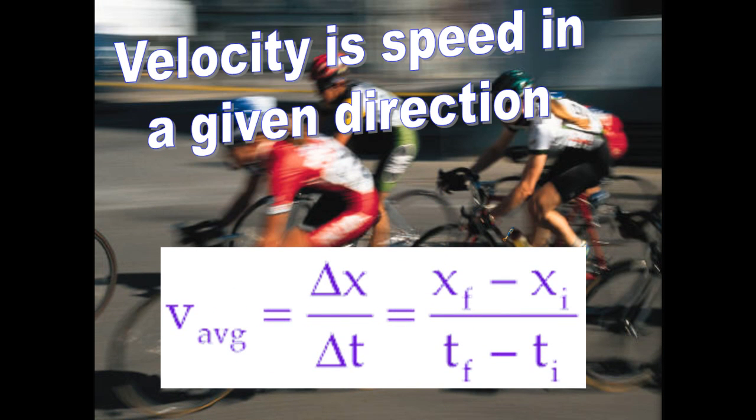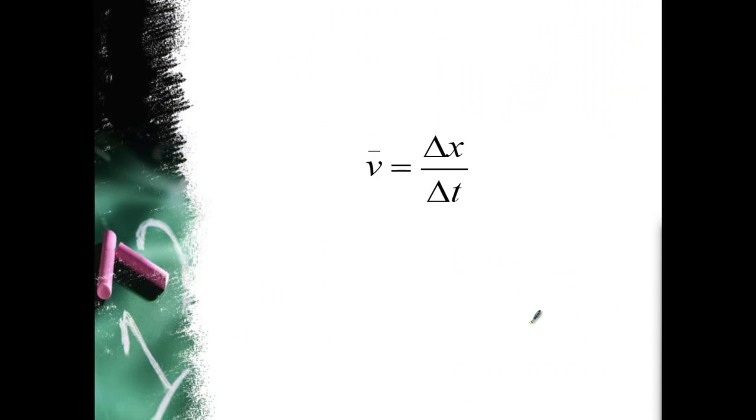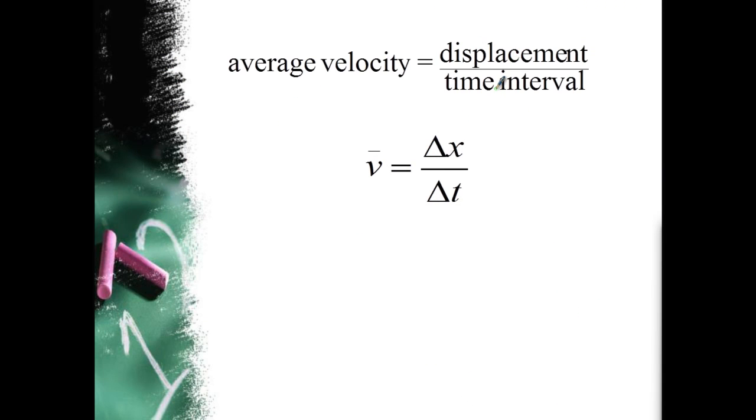So velocity is speed in a given direction. Just like distance is a scalar quantity, so is speed. This one's easy to remember because speed, scalar, velocity is a vector. So you're going to have a direction for that too. And here's another equation. The average velocity equals the change in your position over your change in time. A change in position, that's what this delta means here. It's not a triangle. It's a delta. It means the final position minus the initial position. The change in time is the final time minus the initial time. So your average velocity equals your displacement over time interval.